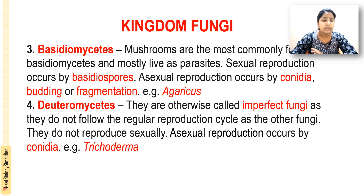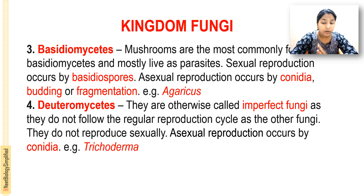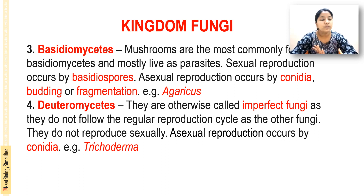The fourth group is Deuteromycetes, also called imperfect fungi or fungi imperfecti. They are imperfect because they do not follow regular reproductive cycles like other fungi. They do not reproduce sexually; asexual reproduction occurs by conidia. Example is Trichoderma. These are the four types of fungi classified based on spore formation.